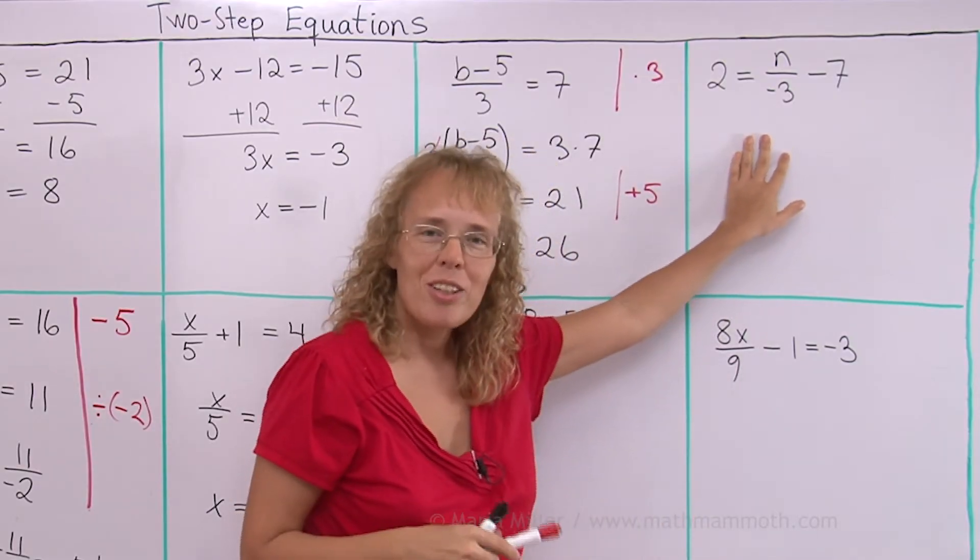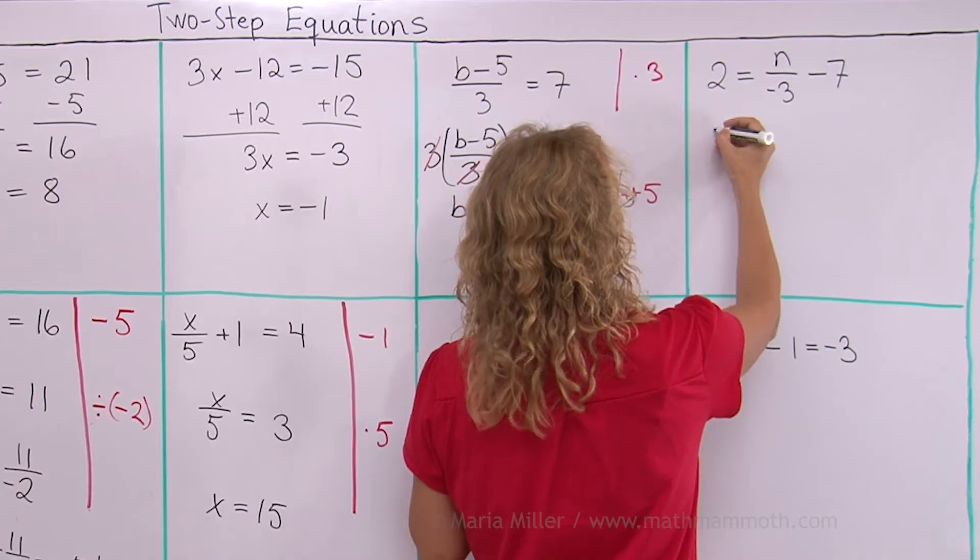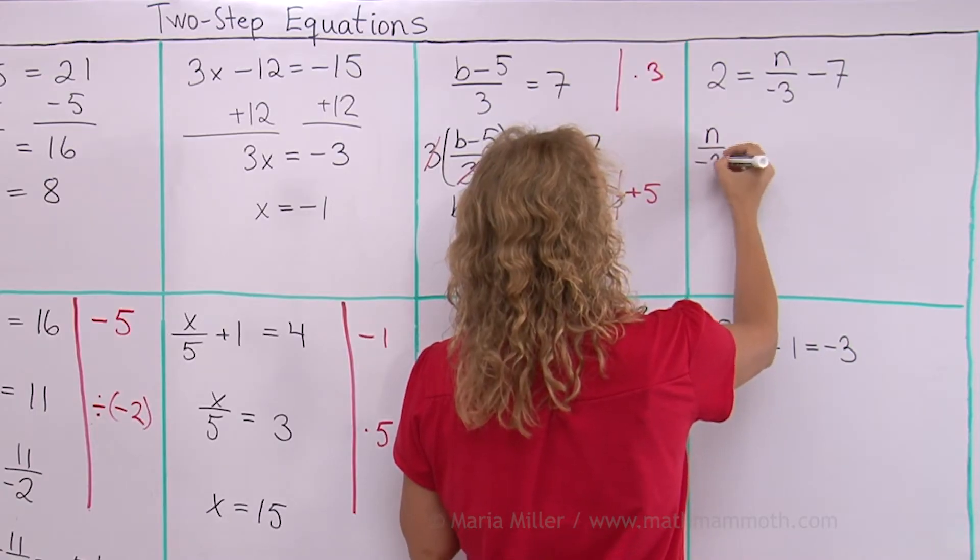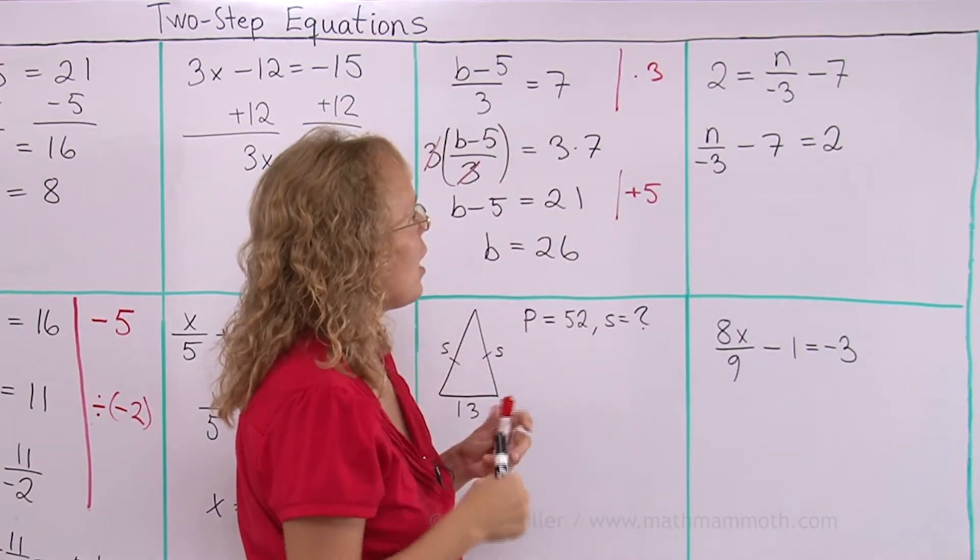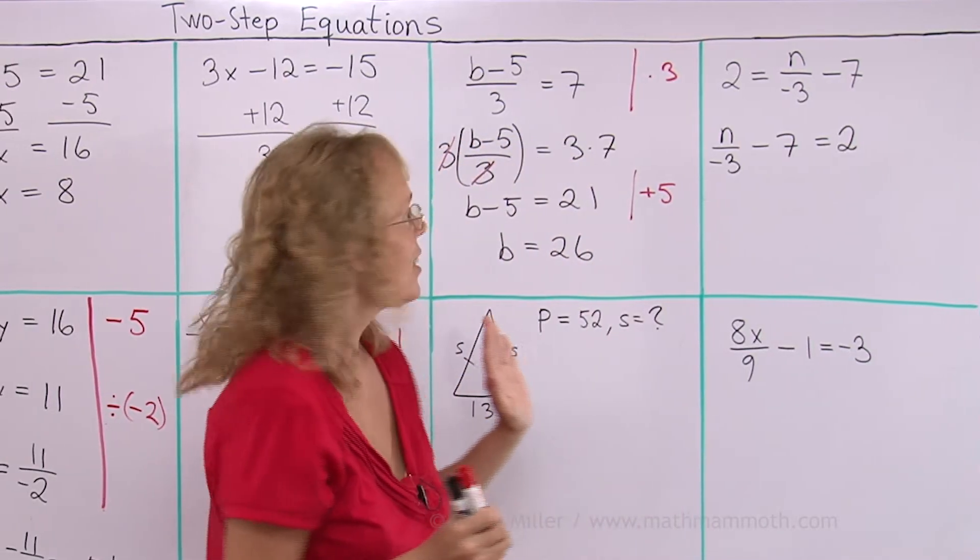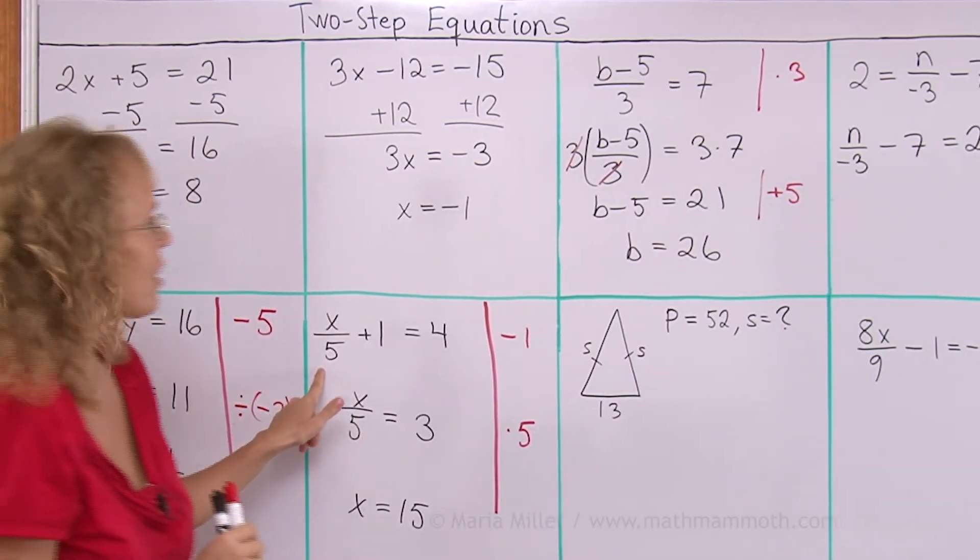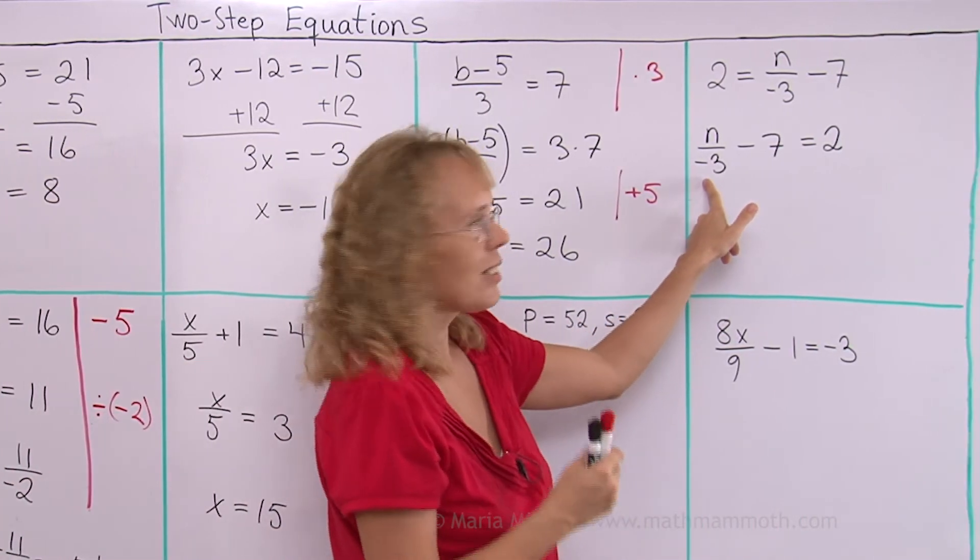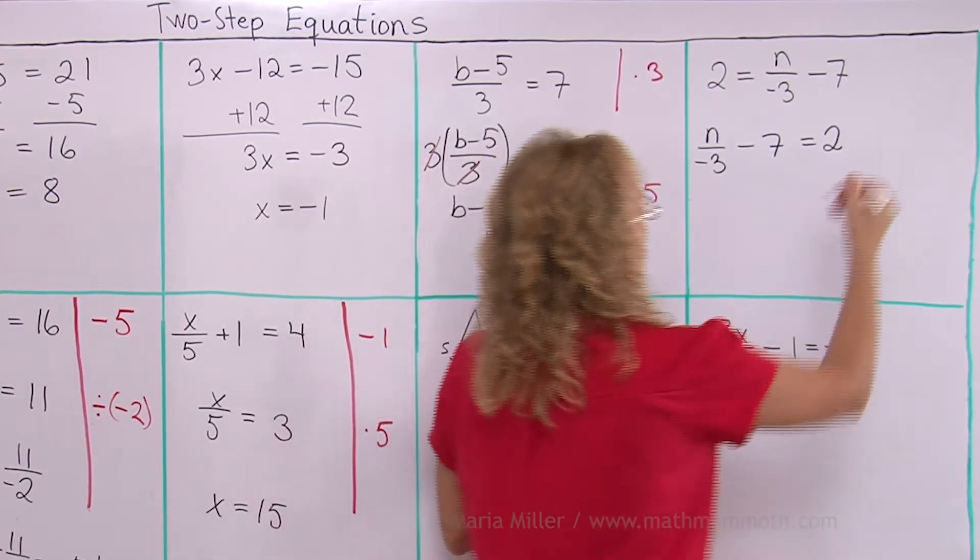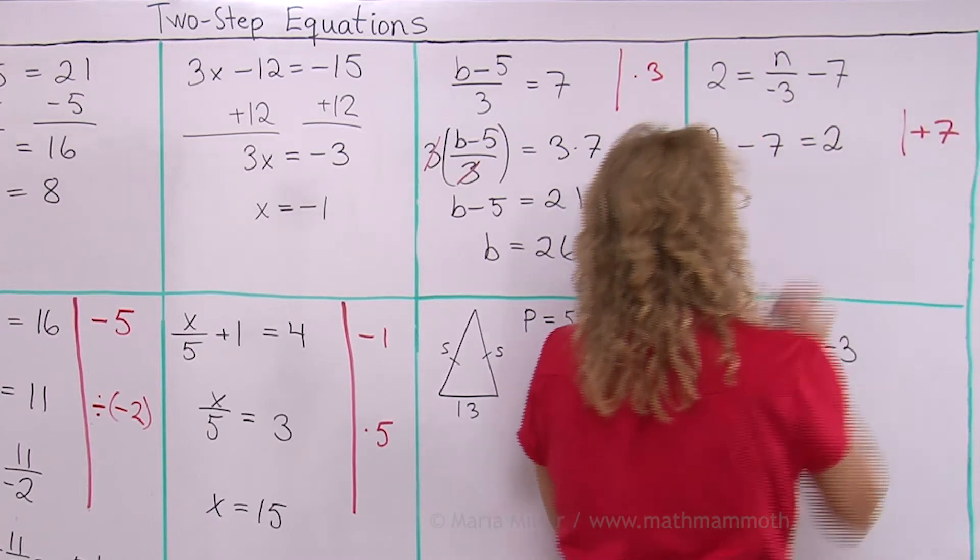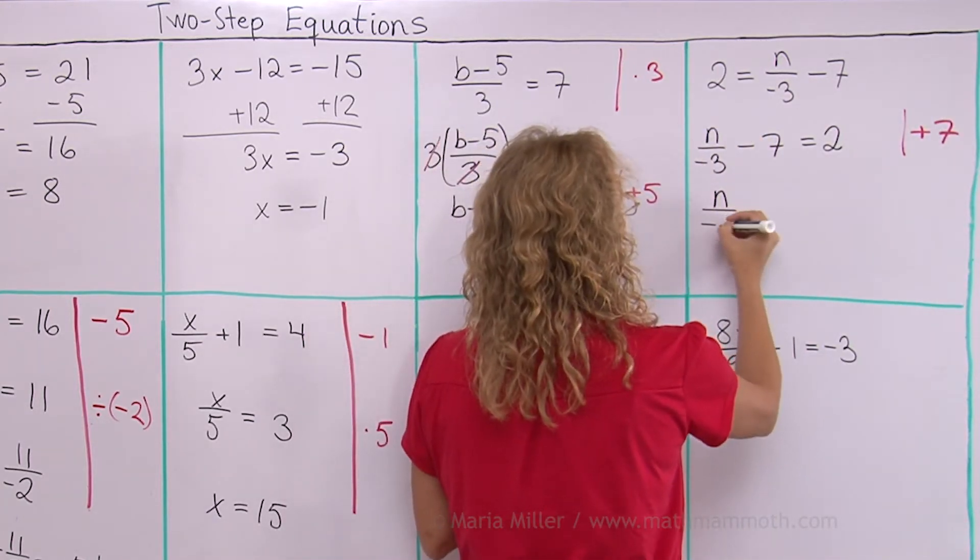This one, maybe again you want to flip the sides first so you get your variable on this left side. n over negative 3 minus 7 equals 2. This is similar to what we had here, this one. It just has more negatives there. We want to have this term with n alone here so we get rid of this minus 7 first by adding 7 to both sides.